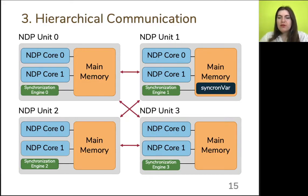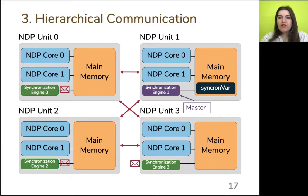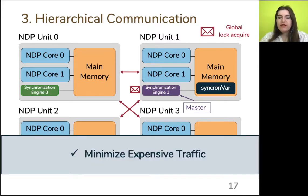Third, Synchron organizes the communication hierarchy. For a particular synchronization variable allocated in an NDP unit, the synchronization engine that is physically located at the same NDP unit with it is considered as the master synchronization engine. The master synchronization engine is responsible to globally coordinate synchronization for that specific variable. NDP cores send synchronization requests to their local synchronization engine located at the same NDP unit. Local synchronization engines then communicate with the master synchronization engine by sending aggregated messages on behalf of each local core through the narrow, expensive links that connect NDP units, coordinating synchronization at a global level. This hierarchical communication minimizes expensive network traffic across NDP units of the system.